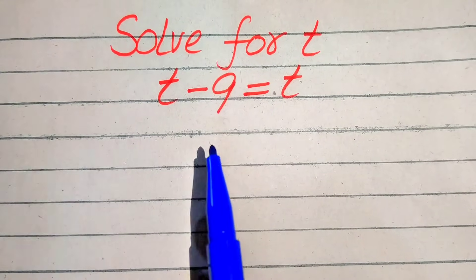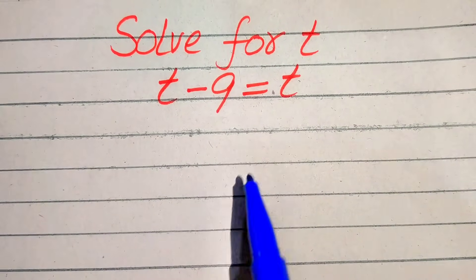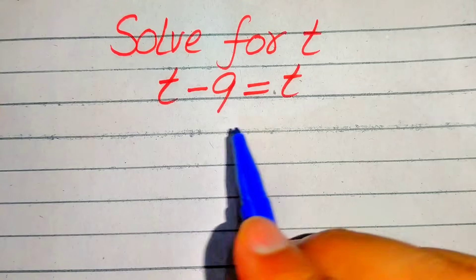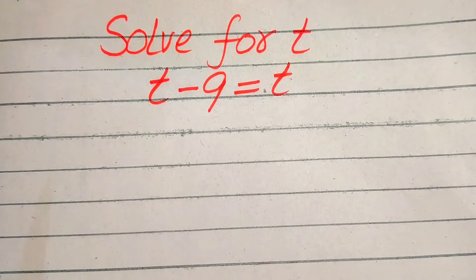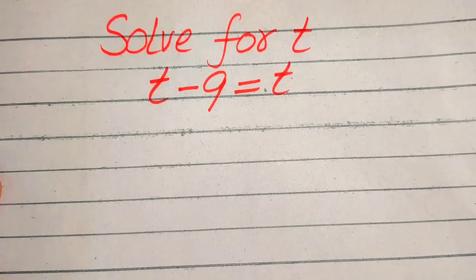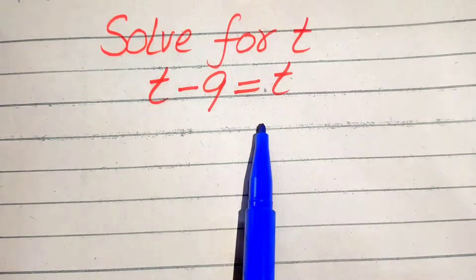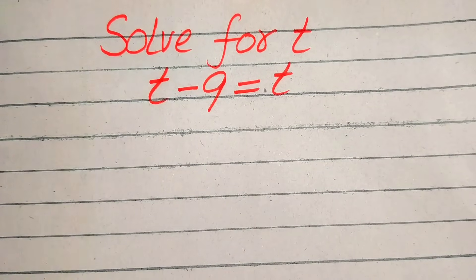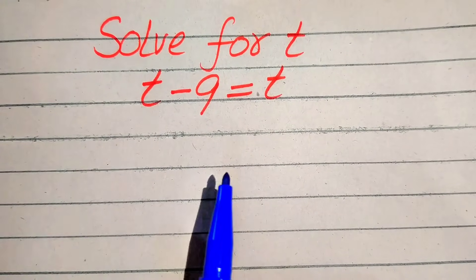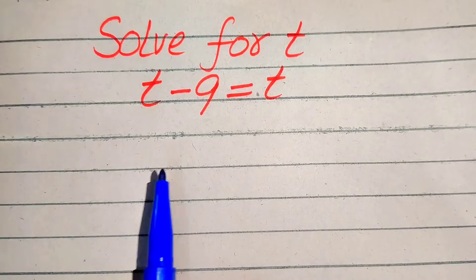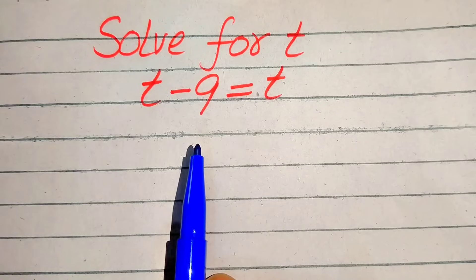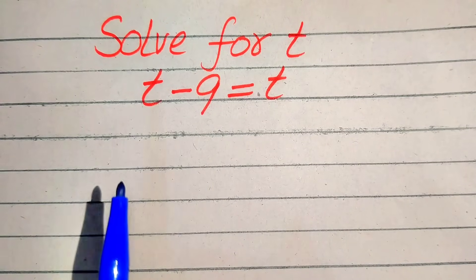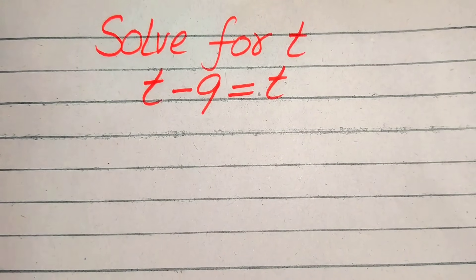If in your exams the question is to find the value of t, you can do this method. But if your exam question is to just verify whether this equation has a solution or not, then you can write by inspection. Here I cannot do the inspection of this question — I will first find the value of t and then verify it.